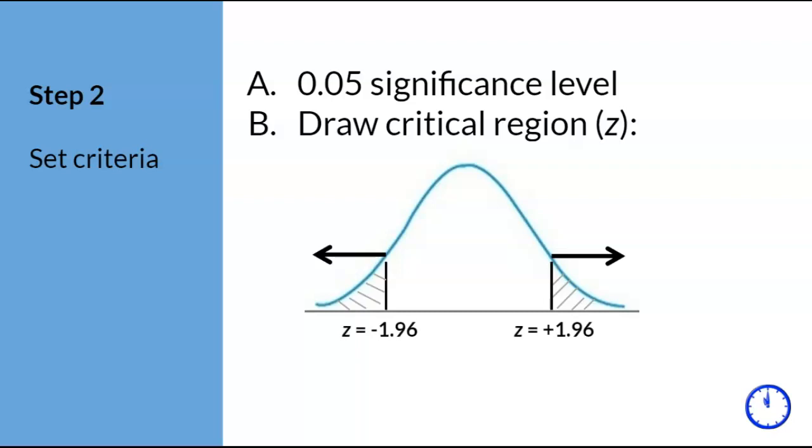The corresponding Z-scores for a 0.05 significance level two tails is Z equals plus or minus 1.96. The box indicates the final answer that I will be looking for on problem sets and exams.